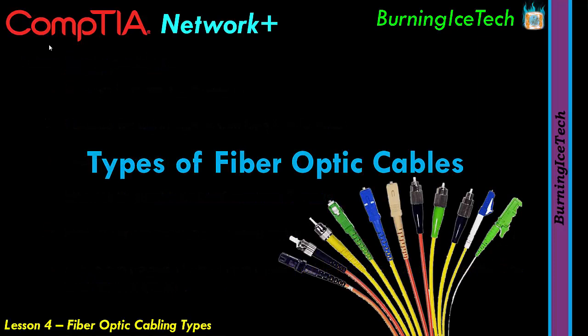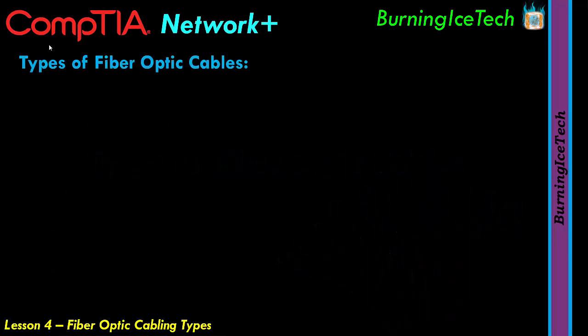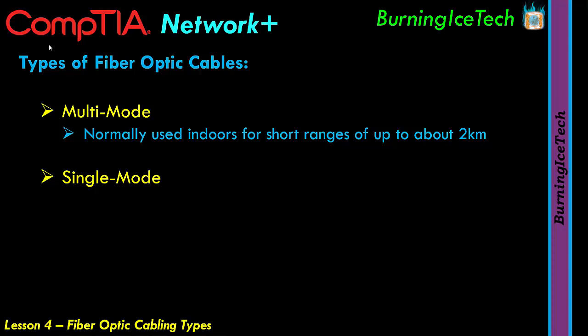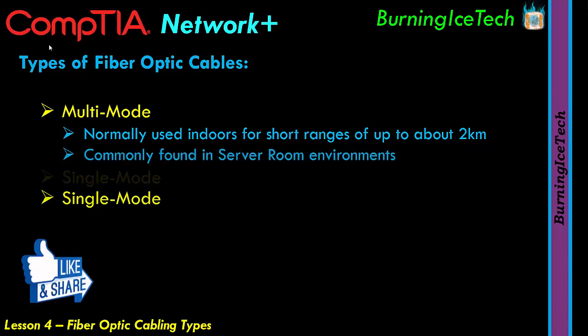When it comes to the different types of fiber optic cables, there are two types you need to be aware of. The first is called multi-mode fiber and the second is called single-mode fiber. The multi-mode fiber is the one we normally use for connecting things indoors. It can go up to two kilometers in distance and is most commonly found in places like a server room. Fiber optic cable is generally a lot faster than ethernet cable, which is why it's the preferred cable in most server rooms for linking various equipment together, allowing communication at much faster speeds than ethernet cables.